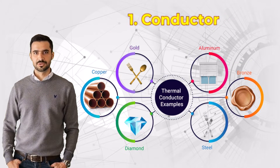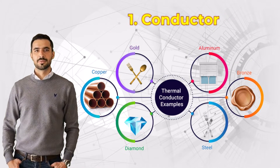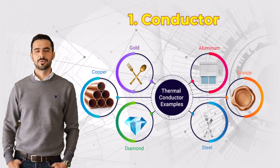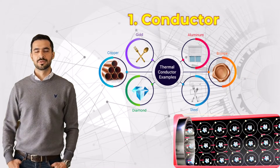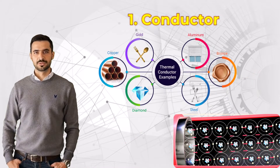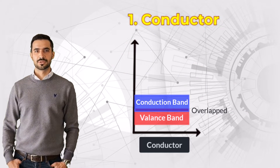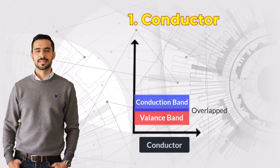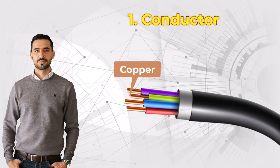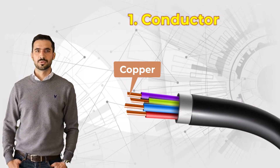First up, we have conductors. These are materials that allow electric current to flow freely because they have a high number of free electrons. To understand why, let's look at their energy levels. In conductors, the conduction band and valence band overlap, making it easy for electrons to move. A great example is copper, which is used in almost all electrical wiring.